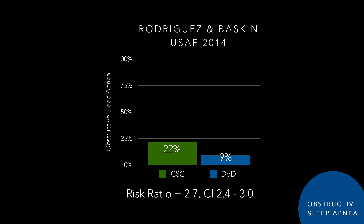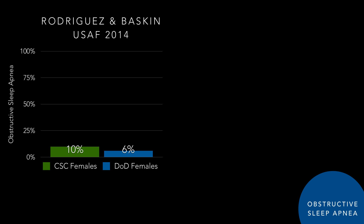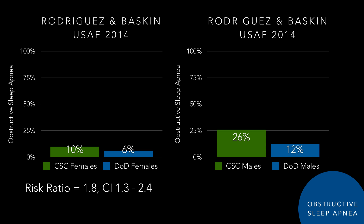We did a similar study using claims data in the United States Air Force Department of Defense population — 1.2 million people from 2009 to 2013. Of those, 109,000 had obstructive sleep apnea, representing 9% of the general population. Among our central serous patients, 22% had obstructive sleep apnea — 397 out of 1,830 patients — giving a risk ratio of 2.7 with tight confidence intervals. So if you have central serous, you're 2.7 times more likely to have sleep apnea than the average person in this population, which included active duty as well as retirees and dependents. Females were roughly twice as likely, and males about 2.4 times as likely to have sleep apnea if they had central serous.